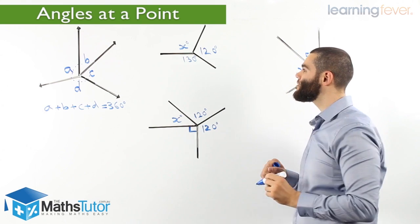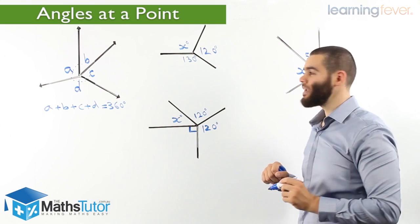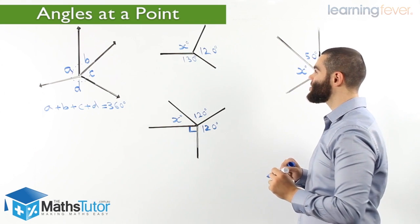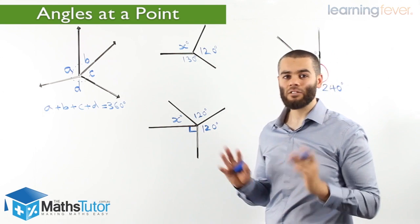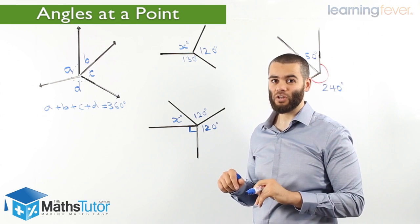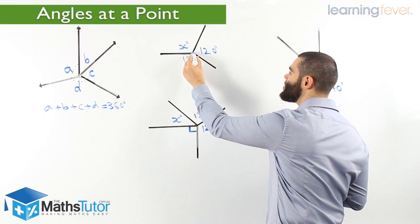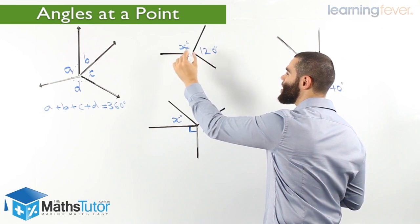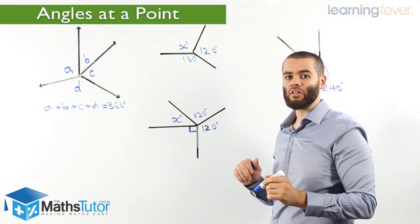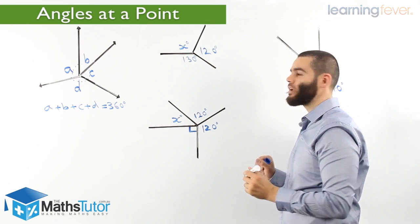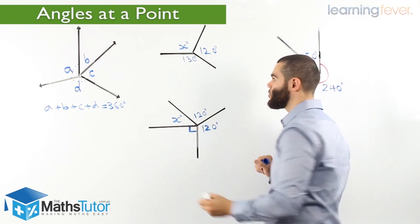So how are we going to use this to solve a missing angle using angles at a point? Here we have three angles: an angle marked with an X, an angle marked with 120, and an angle marked with 130. All together, meeting at a point, hence they make angles at a point.